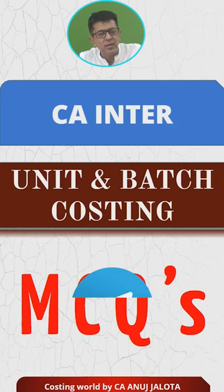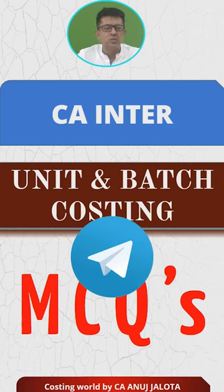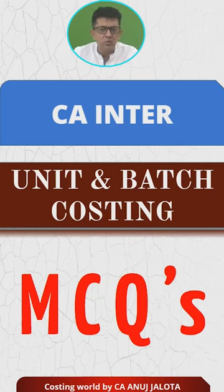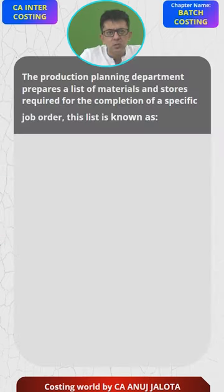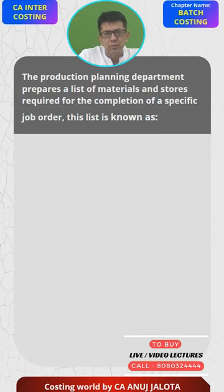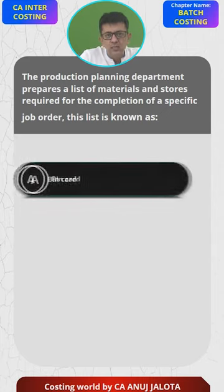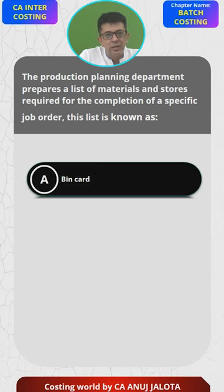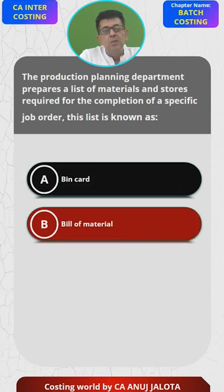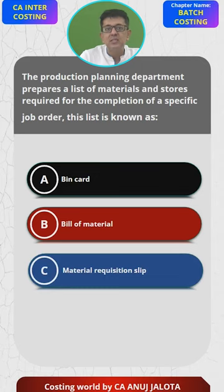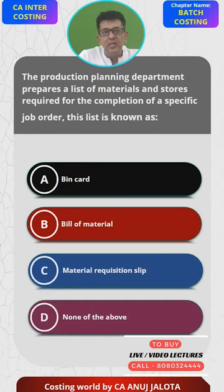Join our Telegram channel and in case you are interested in purchasing the course, the link is there in the description. The production planning department prepares a list of the materials and stores required for completion of a specific job order. This list is known as: A) bin card, B) bill of material, C) material requisition slip, and D) none of the above.